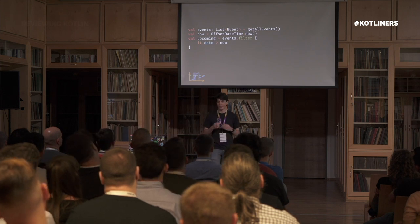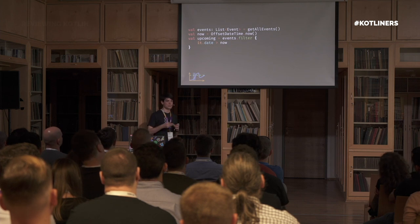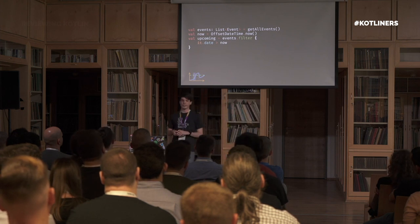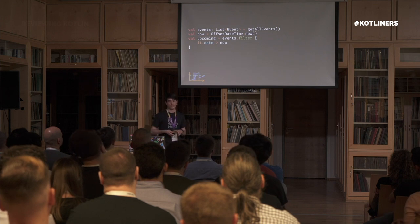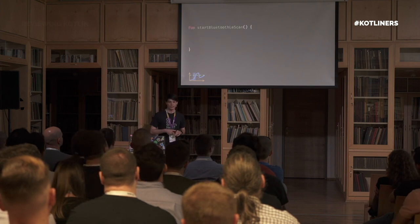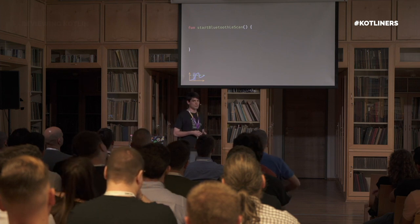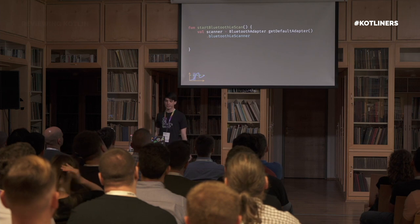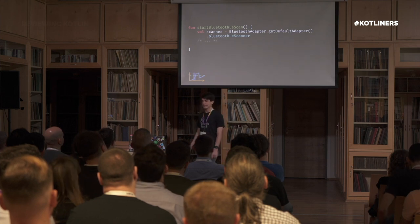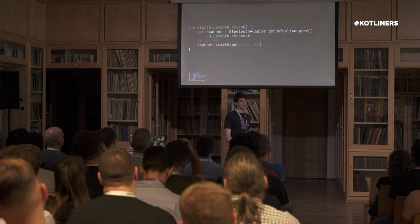My advice for making sure your developers know the cost of these collection functions is to have them implement some of these themselves — have people write a simple filter, map, or groupBy operation, and that way they'll have a feel for the loops that are within all of these functions. For the last example in this phase, let's look at some Bluetooth API — who doesn't love the Bluetooth API? Here's a function that's supposed to start a Bluetooth Low Energy scan. You would fetch the default Bluetooth adapter, ask that adapter for a BluetoothLeScanner instance, set up a bunch of parameters, and finally call scanner.startScan passing in those parameters.